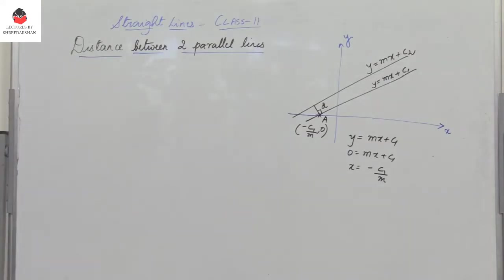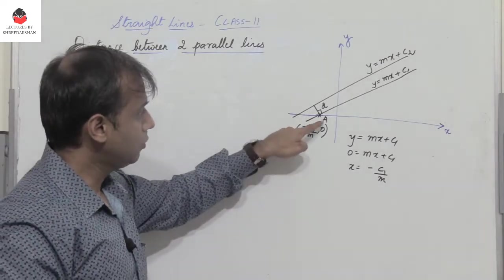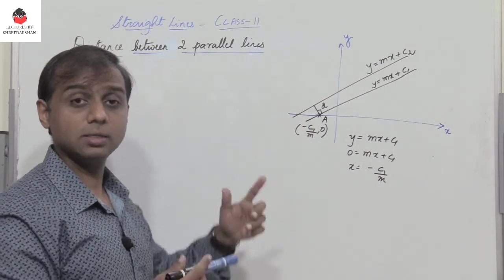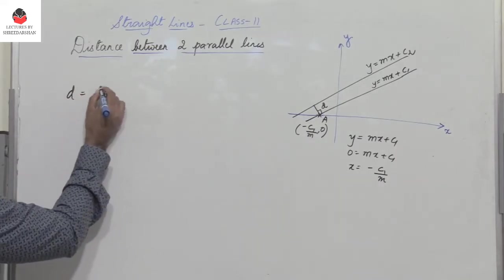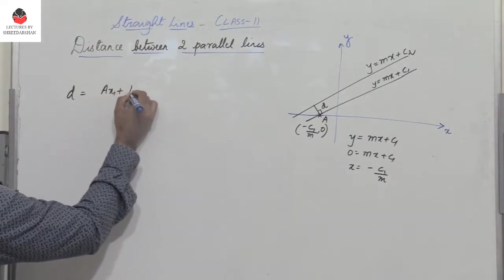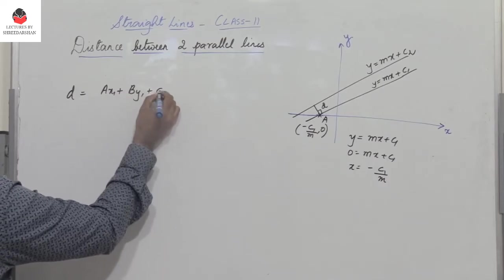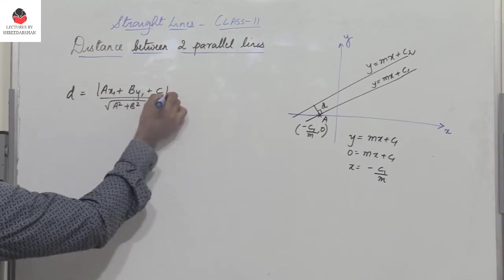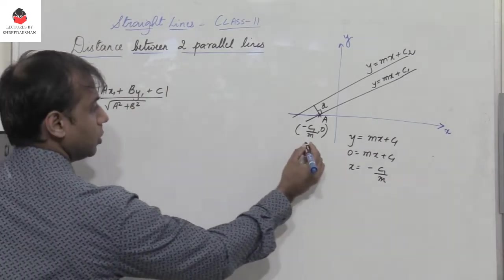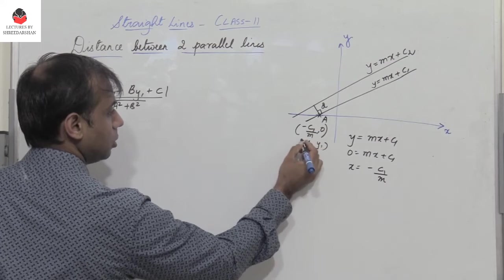Now the general expression to find the distance of a given line from a point A is given by the expression we already know: the distance is ax1 plus by1 plus c divided by root of a square plus b square magnitude. So here what is x1, y1? This point A is x1, y1.